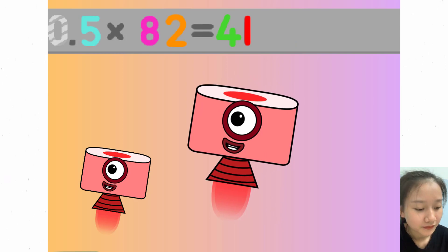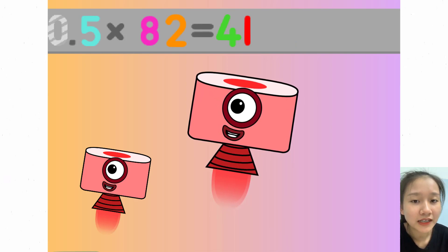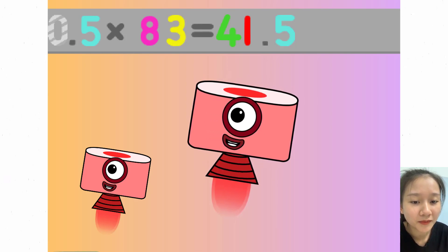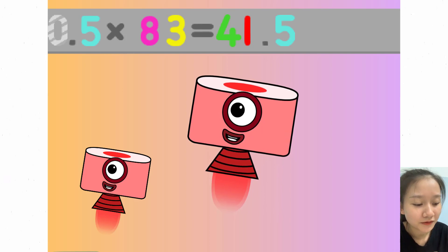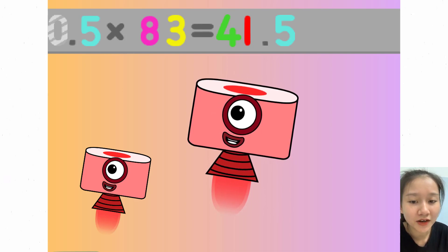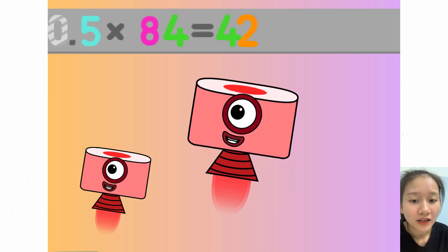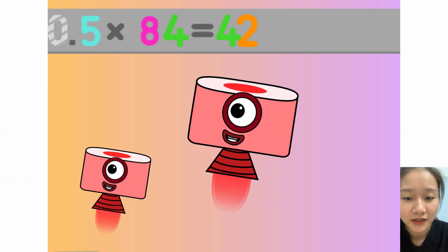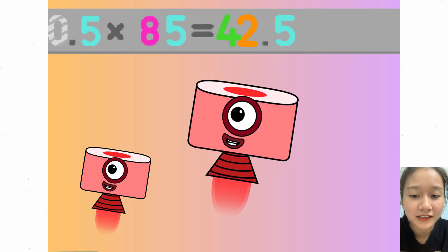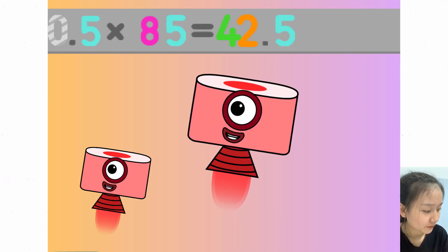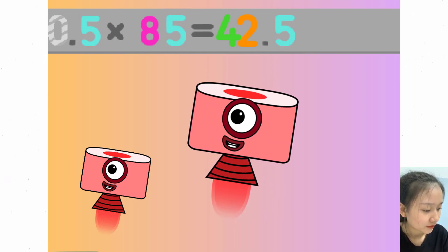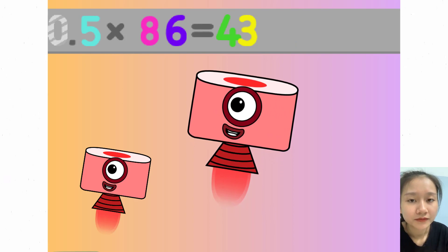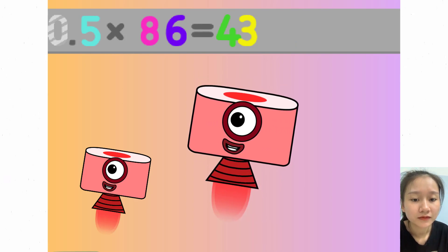0.5 times 82 equals 41. 0.5 times 83 equals 41.5. 0.5 times 84 equals 42. 0.5 times 85 equals 42.5. 0.5 times 86 equals 43.